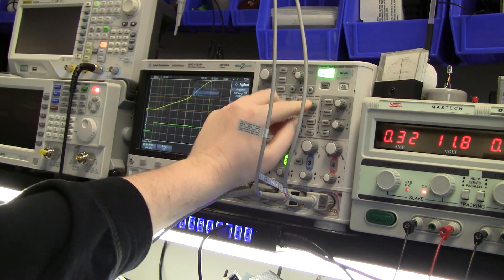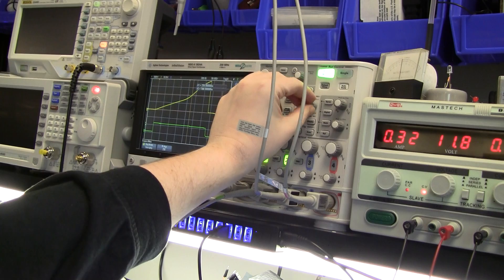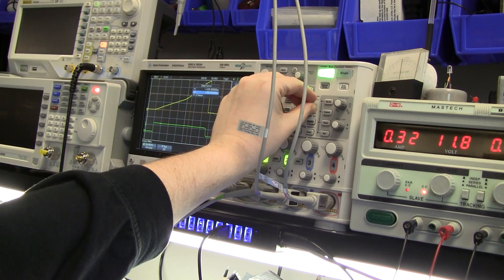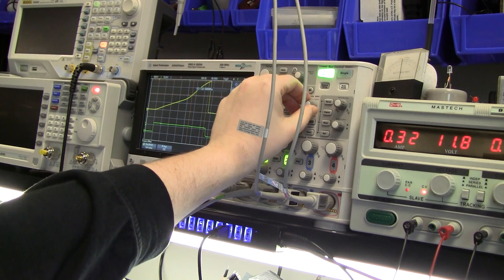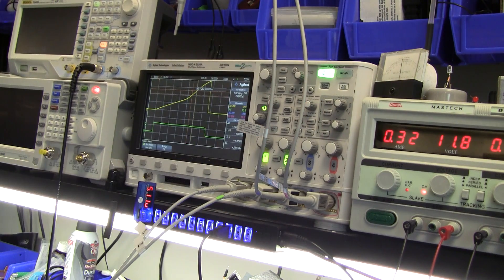You can also do the same trick for the region up here where it's actually saturated. Although picking a linear part of it is a little tricky because it's well and truly into saturation there but let's do that.